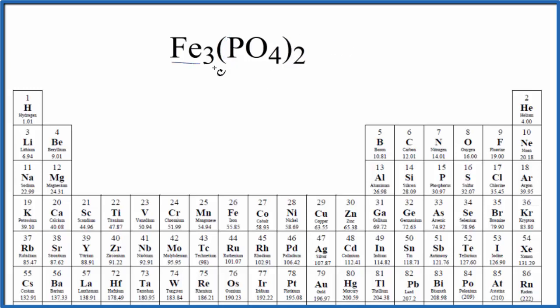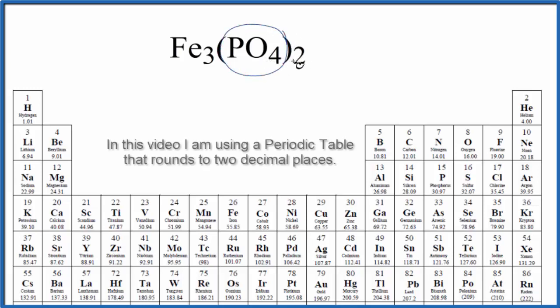When we find the molar mass, we have our three iron atoms. Then we have these two phosphate ions, PO4. So we have to account for the two phosphate ions as well.